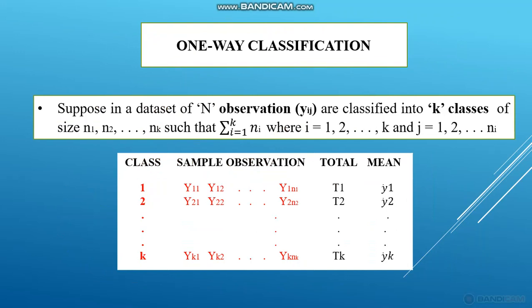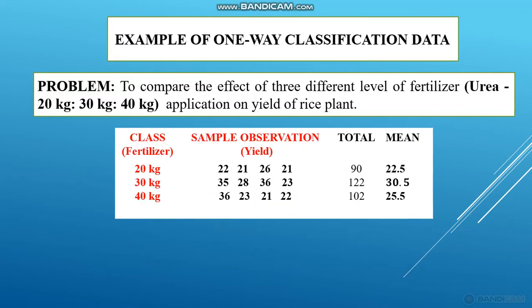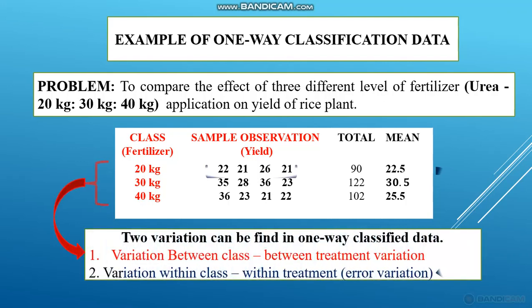This classification is represented as one-way classification data with the corresponding example. For this data, if we apply ANOVA, we are comparing the three means. To compare these three means, we apply ANOVA. When we apply ANOVA to this type of one-way classified data, it is called one-way ANOVA.